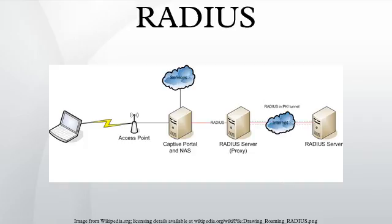Once the user is authenticated, the RADIUS server will often check that the user is authorized to use the network service requested. A given user may be allowed to use a company's wireless network, but not its VPN service, for example. This information may be stored locally on the RADIUS server, or may be looked up in an external source such as LDAP or Active Directory. Each of these three RADIUS responses may include a reply message attribute which may give a reason for the rejection, the prompt for the challenge, or a welcome message for the accept. The text in the attribute can be passed on to the user in a return web page.